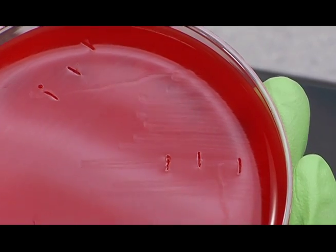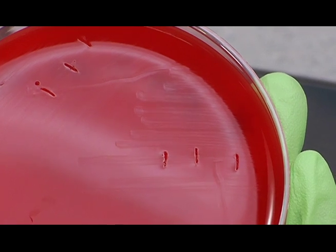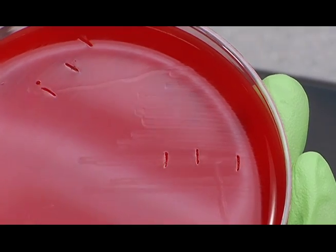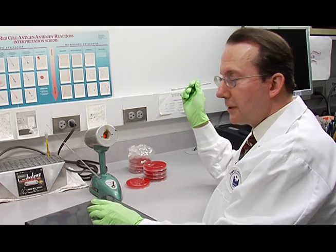The purpose of this is to get some of the organism down under the agar, which will enhance the beta-hemolysis. So now we're finished with streaking subcultures.